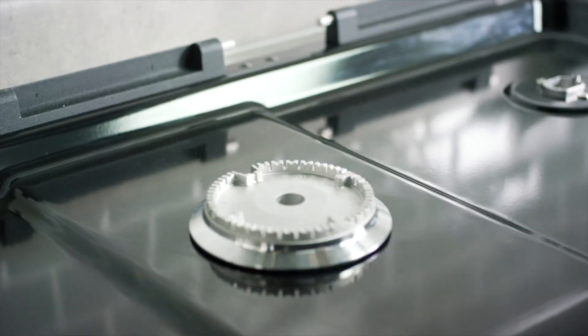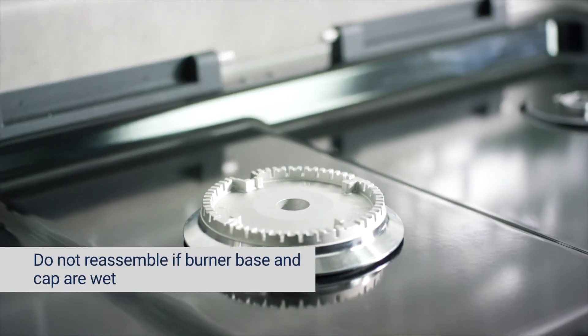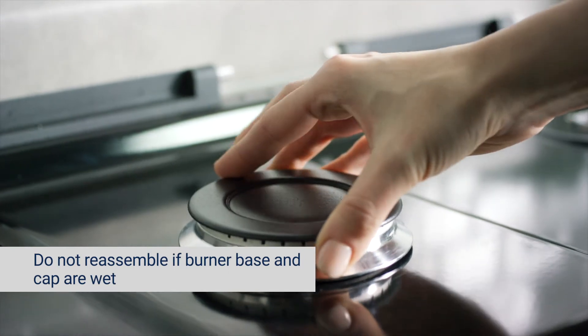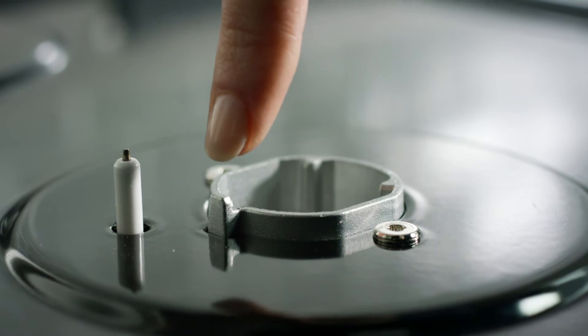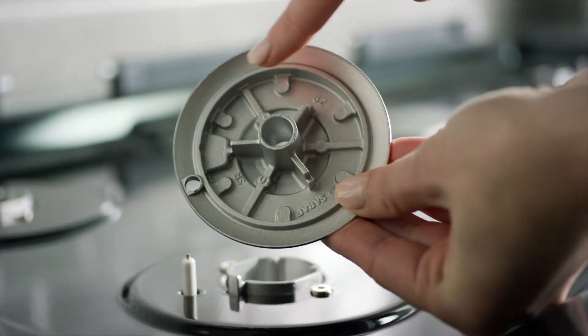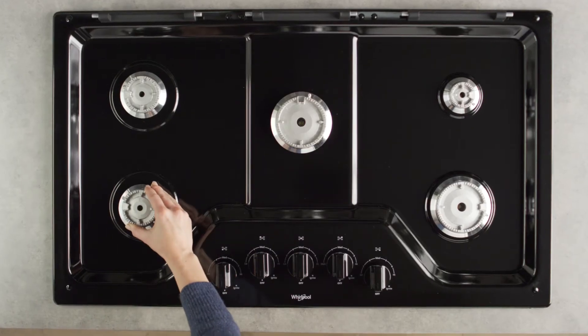Next, reinstall the burner base and cap. Make sure they are both dry prior to reassembly. If your cooktop has alignment pins, be sure they are properly adjusted with the burner cap and that each burner cap is on the correct burner base.